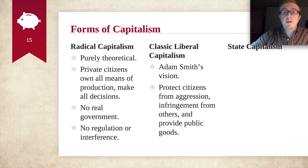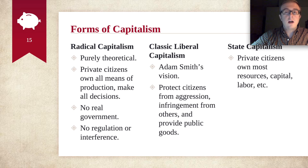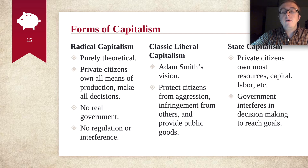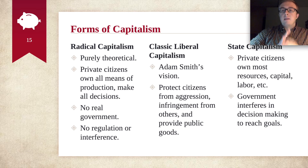Then you get something called state capitalism, which is probably closer to what we actually have in the United States today. Private citizens do own most of the resources, the capital, the labor. Business is booming in the U.S. right now — there's tons of businesses doing all types of things. However, the government does interfere in decision-making to reach certain goals. A good example of this is actually what's going on right now with coronavirus — there are a lot of businesses reorienting themselves to produce things they might not normally produce.